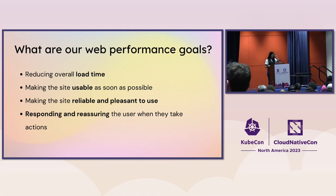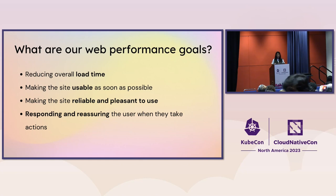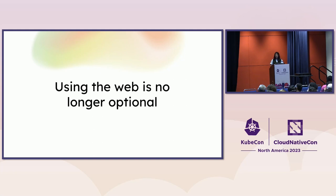We're all users of the web. When we're trying to carry out critical things like checking into a flight or accessing government services, it's really important to have a reliable website. Part of web performance should be responding and reassuring users when they're taking action. You might not always be able to make your backend processes fast enough for near-instantaneous feedback, but you can respond and reassure users as they're taking actions. Using the web is no longer optional, especially since the pandemic. It's our job as developers to create reliable and performant experiences for our users.